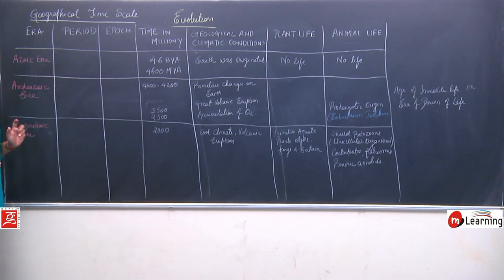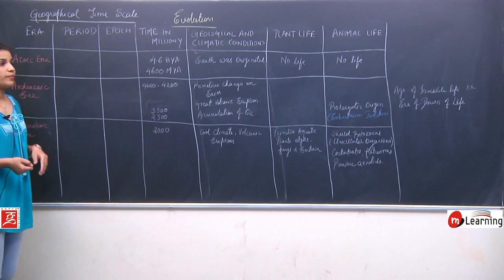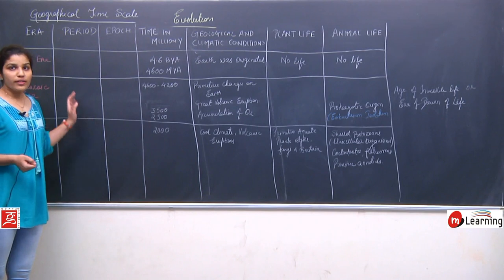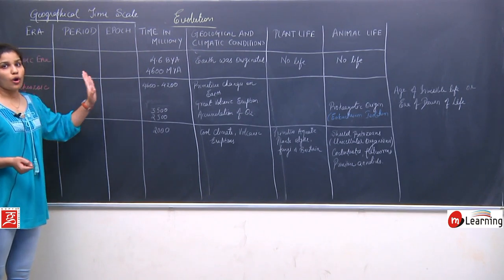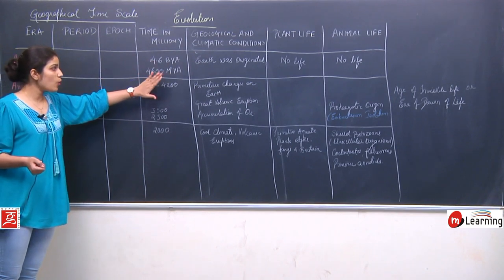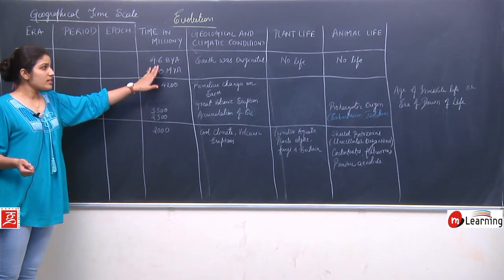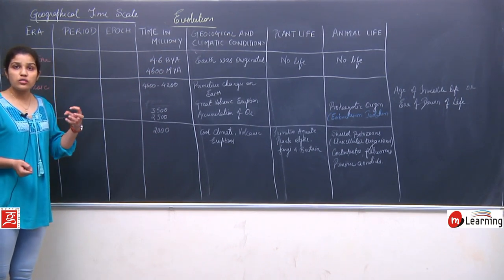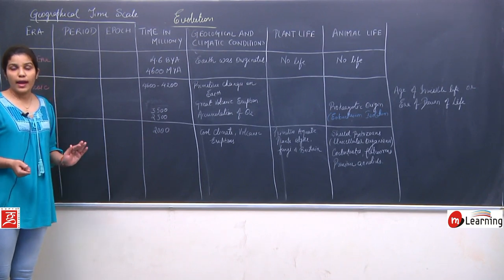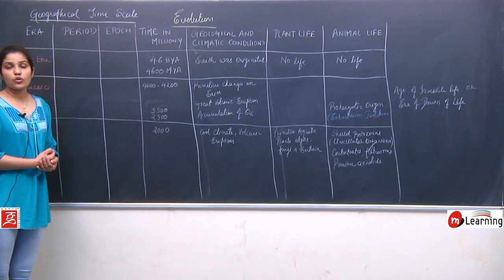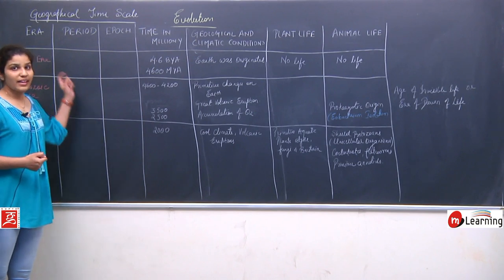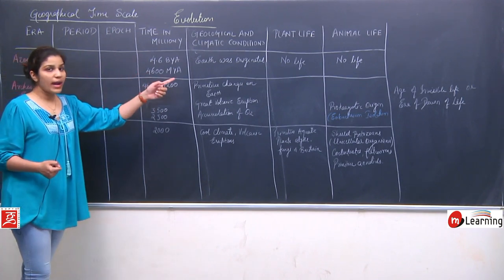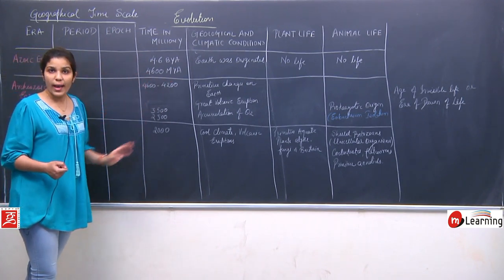The Azoic era is when there was no life on earth and the earth was only just originated. The time of this era was 4.6 billion years ago, or 4600 million years ago. There was no plant life and there was no animal life.